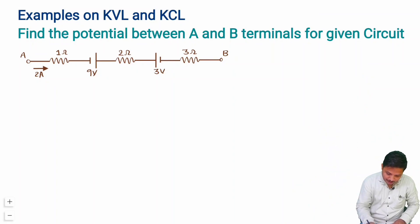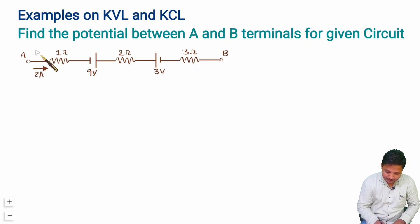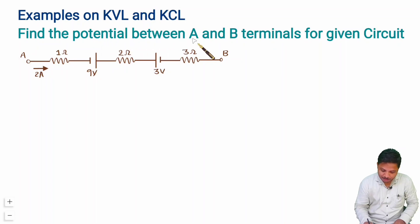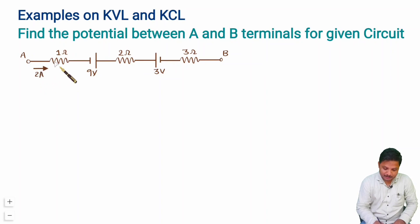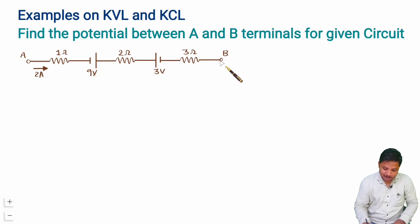In this circuit we are required to find the potential between terminal A and terminal B. Here we have terminal A and here we have terminal B, and we can see that 2 ampere current is going inside this circuit. To solve this type of question, we consider a battery having potential VAB connected between A and B.